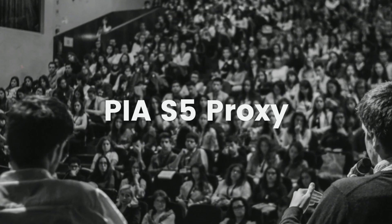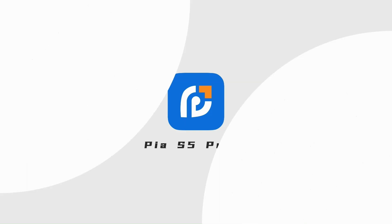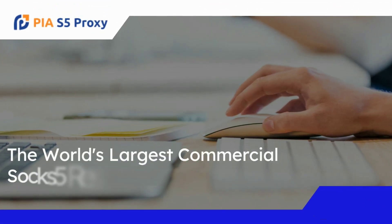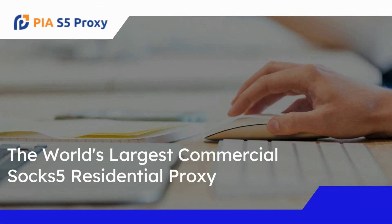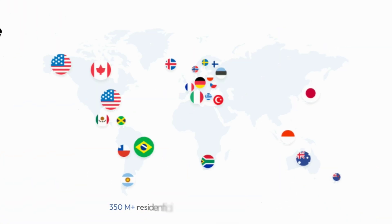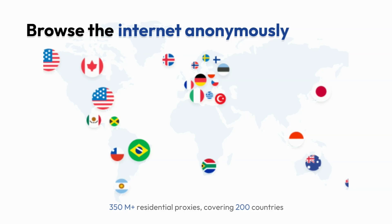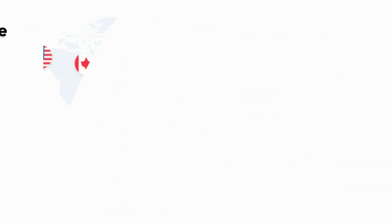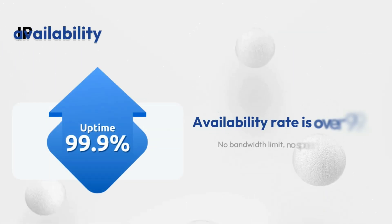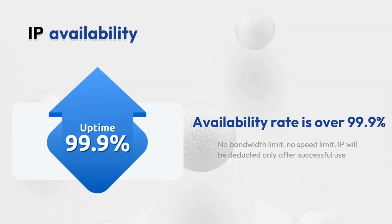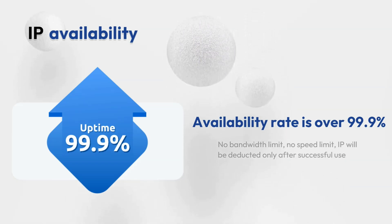PIA S5 Proxy. PIA S5 Proxy is the world's largest commercial SOCKS5 residential proxy, currently with 350 million residential proxies covering 200 countries. No bandwidth limit, no speed limit — IP will be deducted only after successful use, and availability rate is over 99.9 percent.